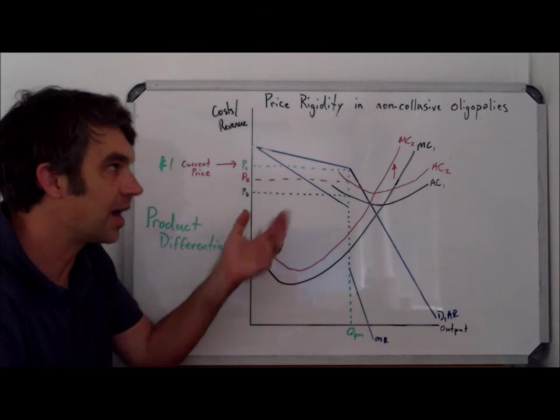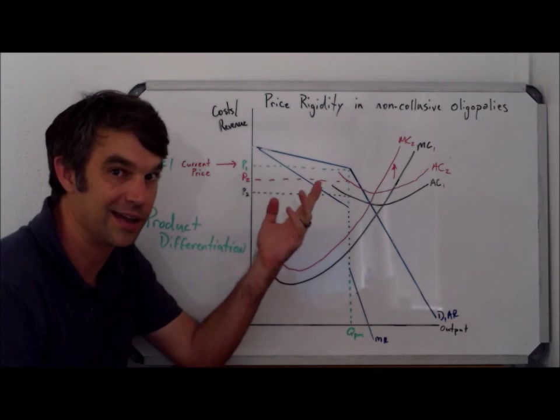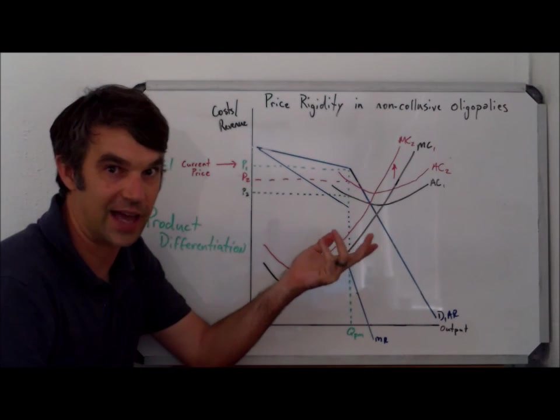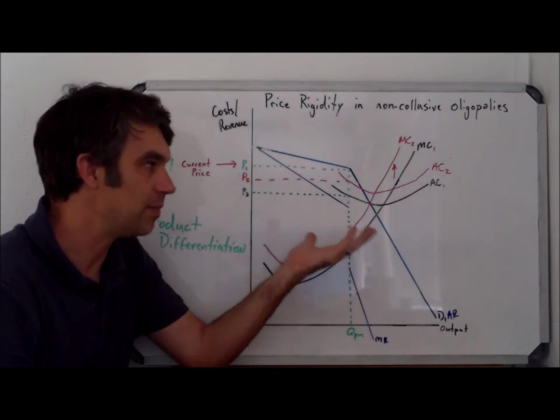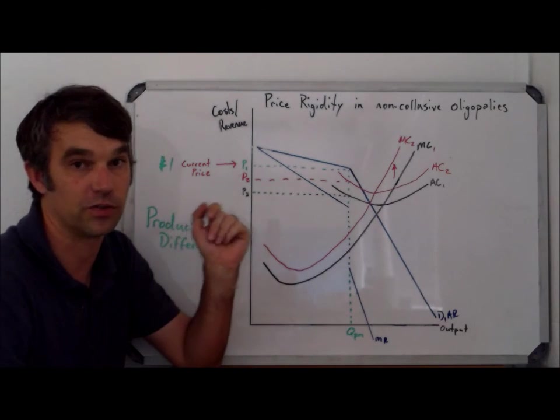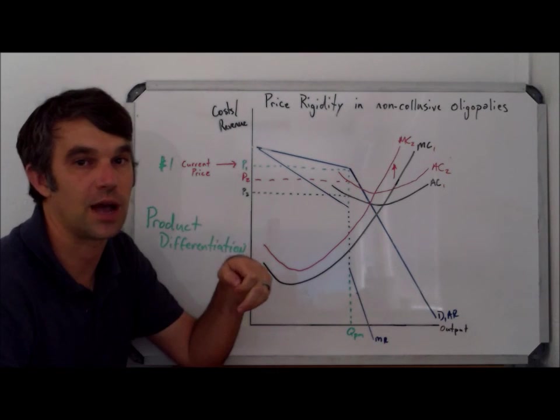So, the non-collusive oligopoly is negative for consumers and the price is high. But the flip side of that is that it's not really that great for the oligopoly either because they don't have as much control over price as they would like to have. If you have any questions or comments, leave them below.